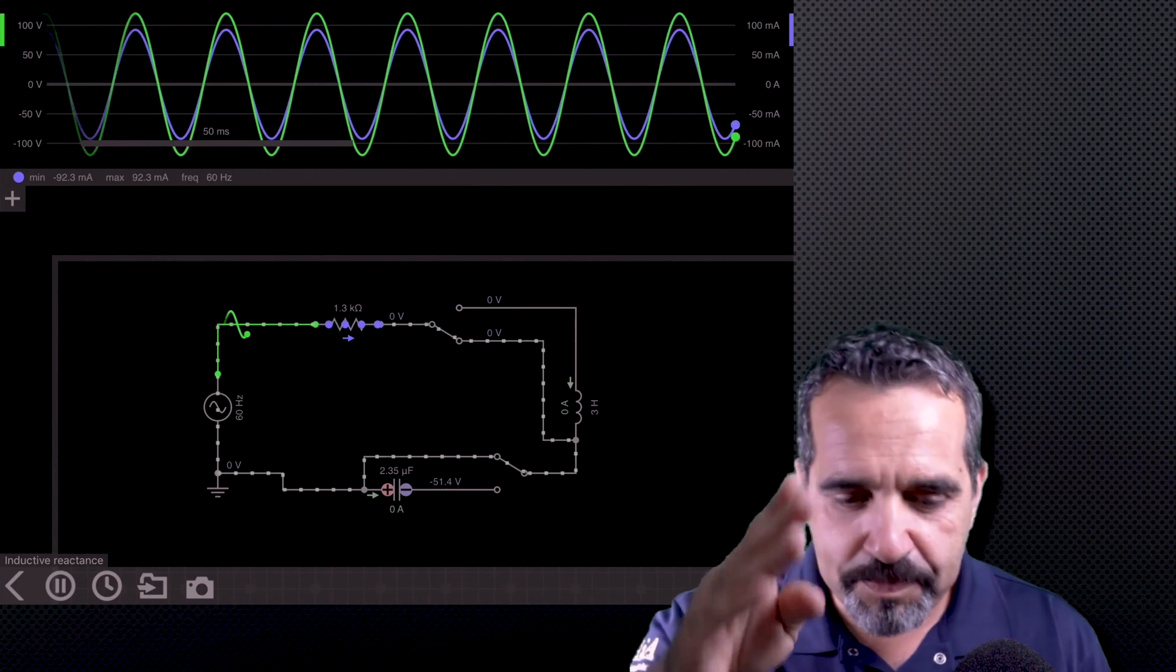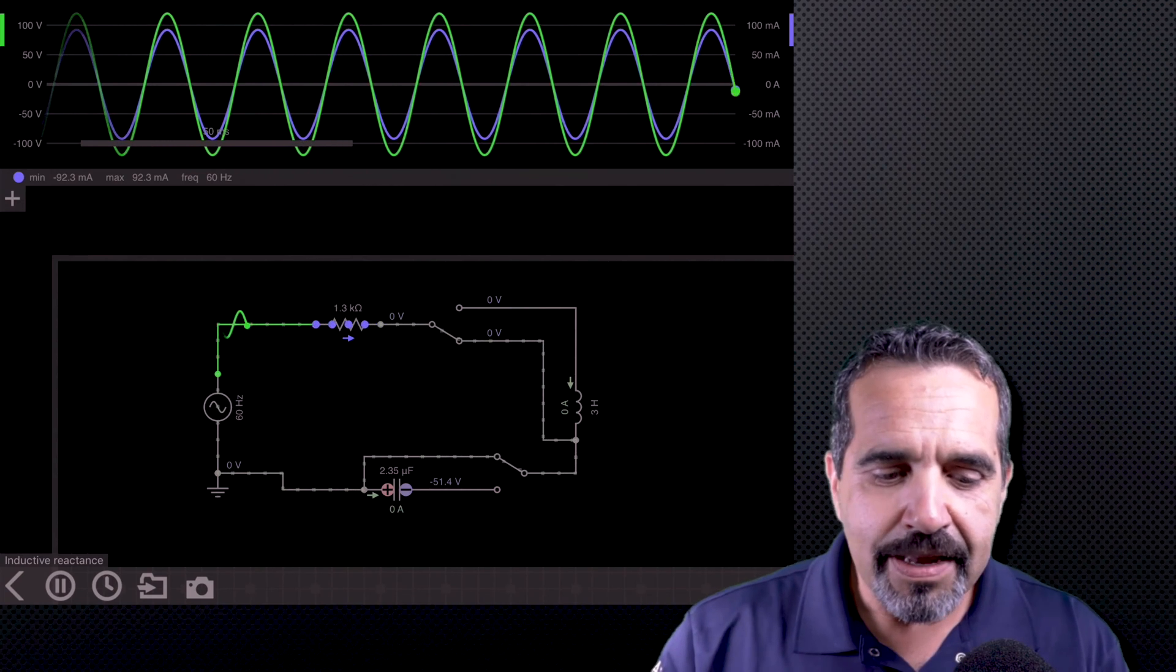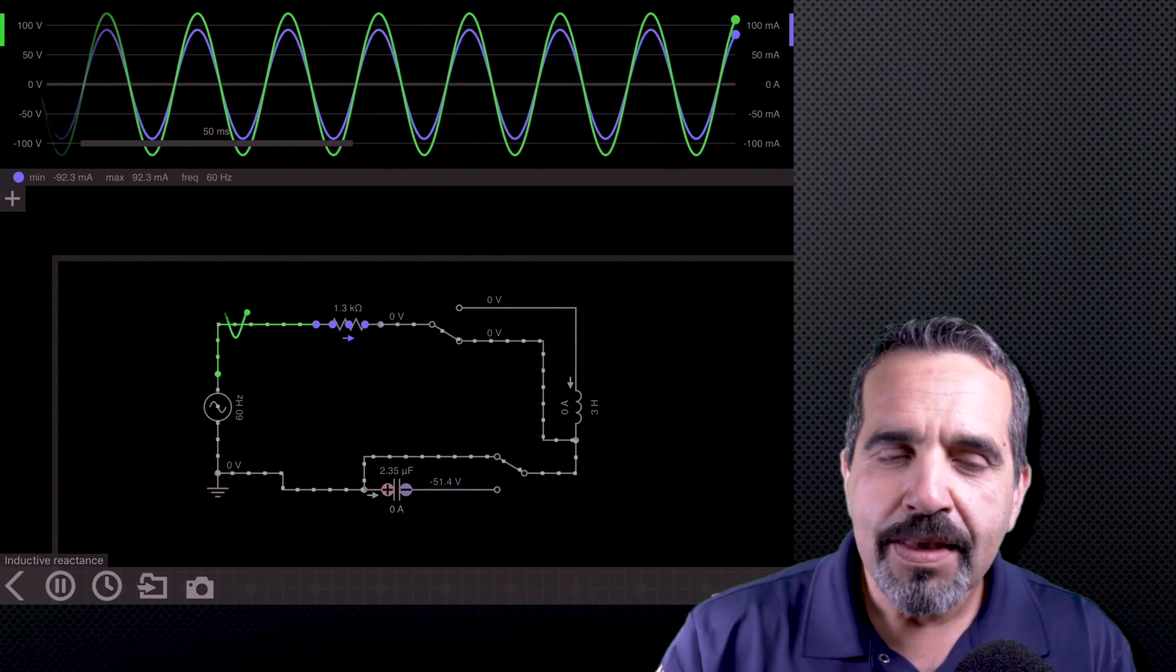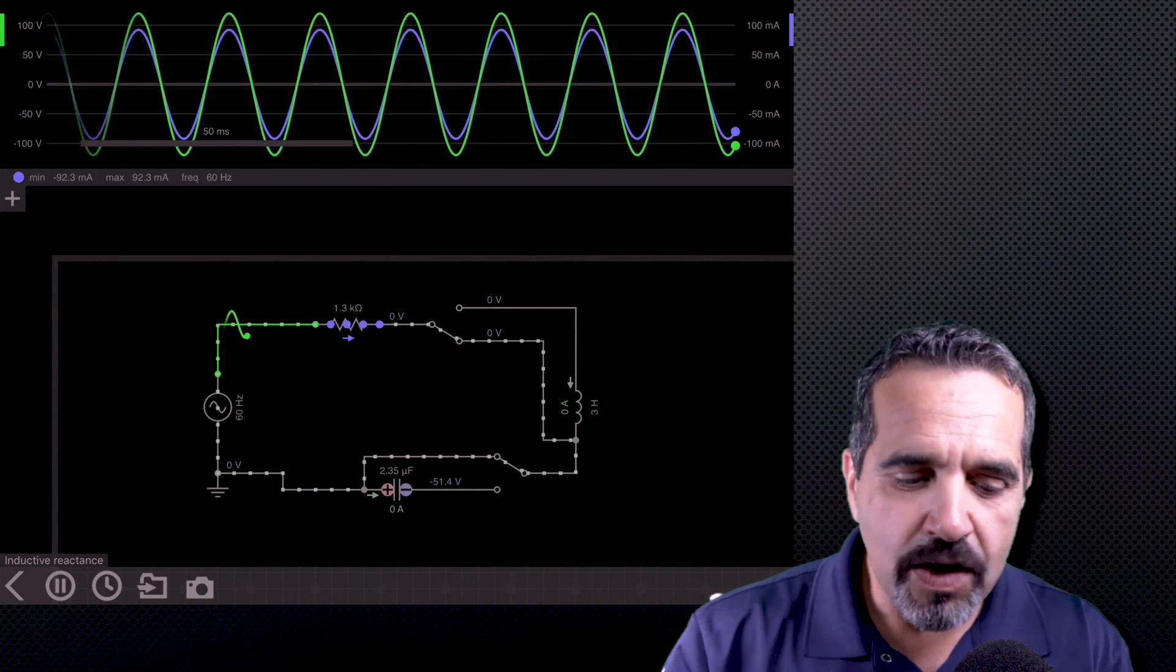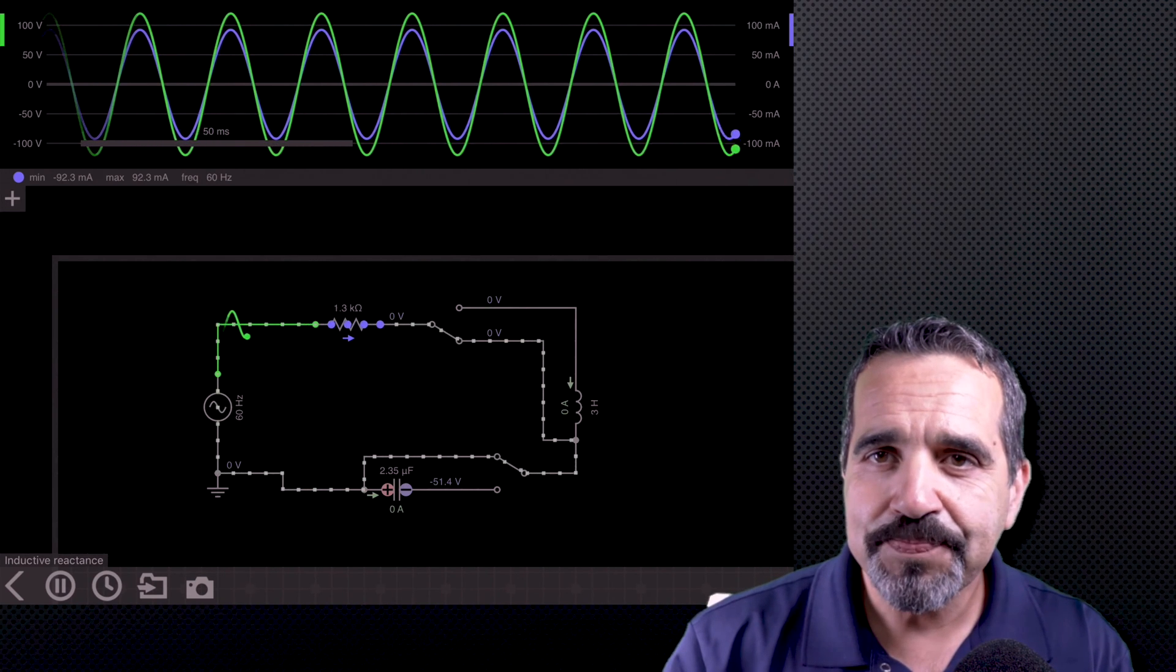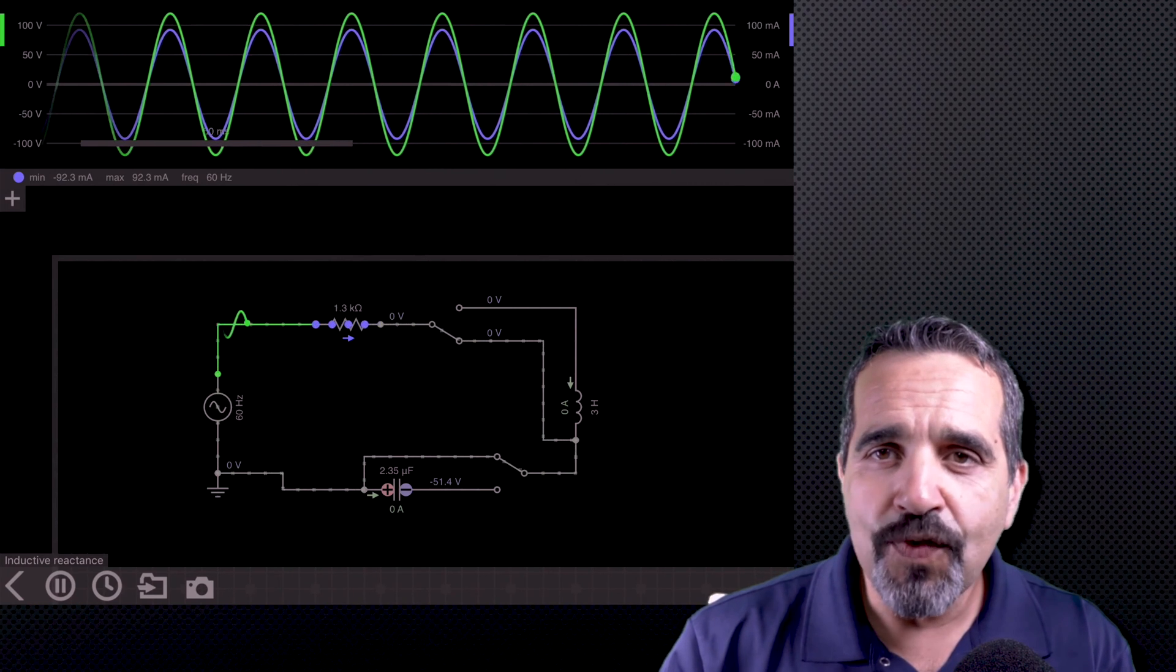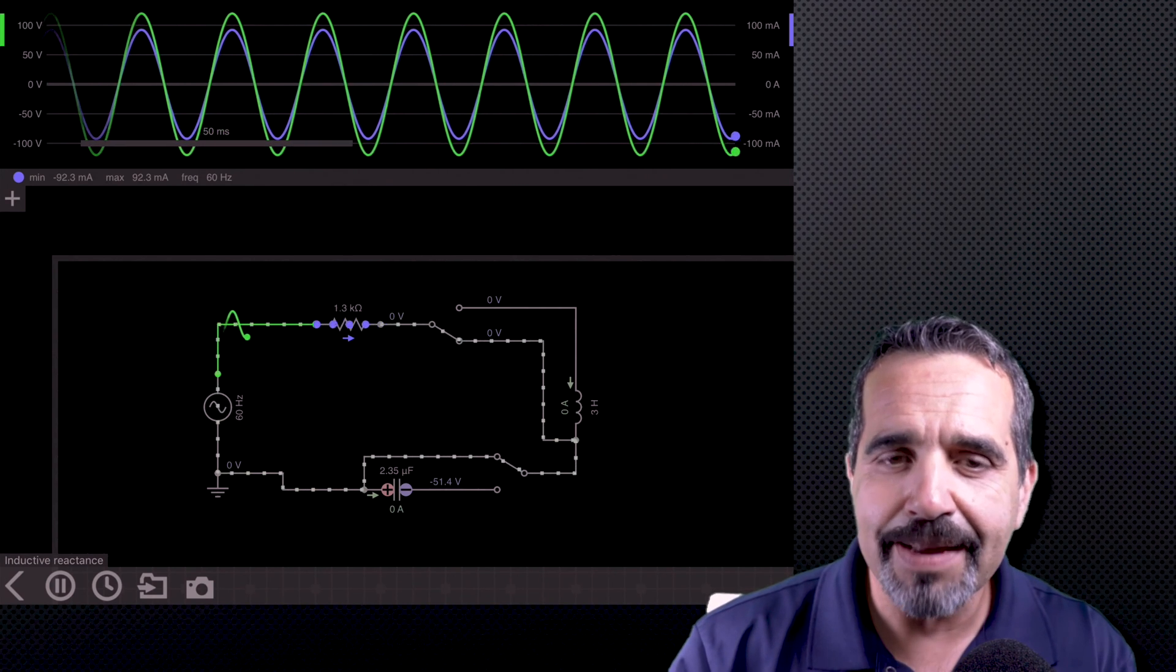It rises and it falls. It goes past zero. It falls to negative. Then it goes back up to positive. And the green waveform is the voltage waveform. The purple waveform is the current waveform. And in a resistive circuit, voltage and current are in exactly the same phase. They both rise and they both fall. They both reach zero and they both reach their peaks at the same exact time.